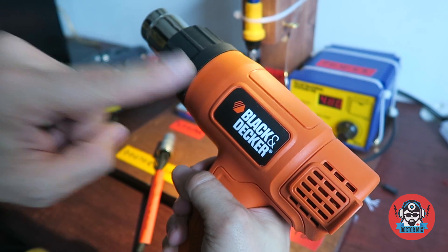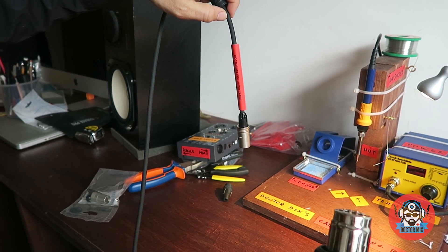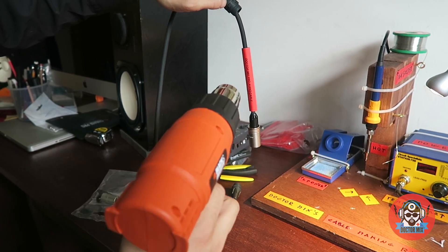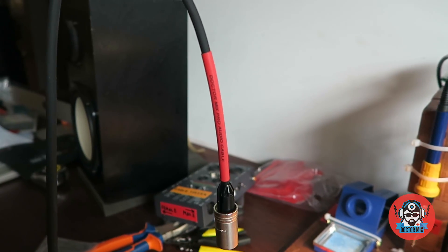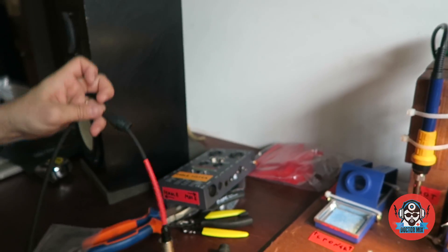For the heat shrink, we will need a heat gun. So that's done. We let it cool off. Let's do the other side now.